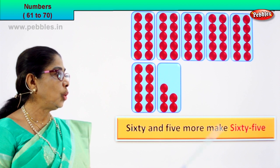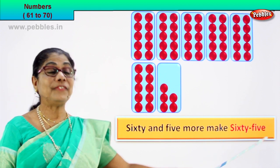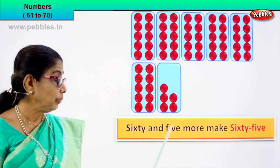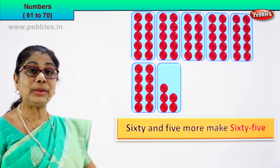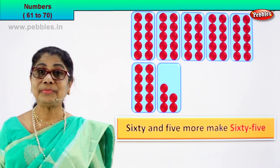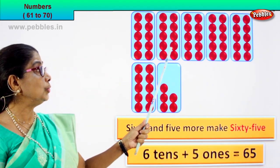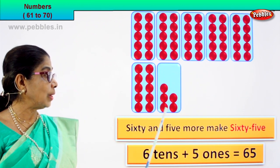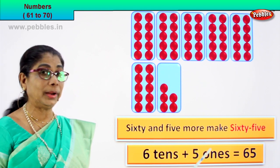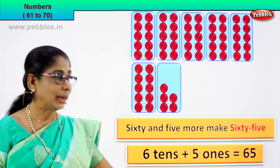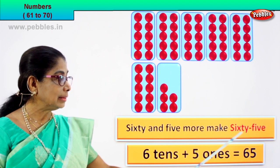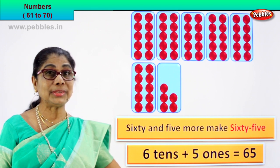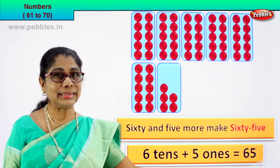Sixty and five more make sixty-five. What is sixty? Six tens. What is five? Five ones. So sixty plus five ones equal to sixty-five. Six tens plus one, two, three, five ones equals sixty-five. The numeral is sixty-five. And its name is sixty-five. Six tens and five ones equal to sixty-five.